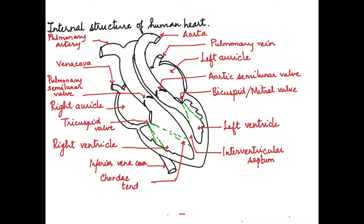The right side of the heart deals with deoxygenated blood and the left side with oxygenated blood. The thread-like structures present are the chordae tendineae, attached to the valves and the wall of the heart, which prevent the overturning of the valves during ventricular contraction. These are attached to special muscles on the wall of the ventricle called the papillary muscles. This completes the labeling and explanation of the parts of the heart.